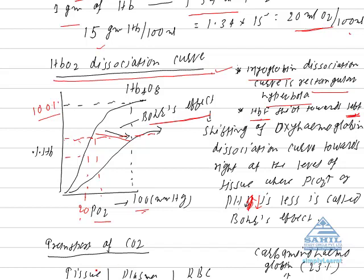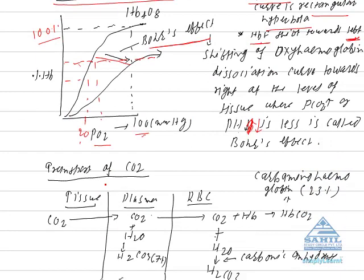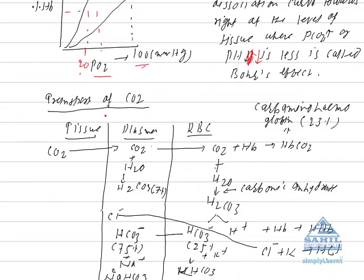Now we come to transport of carbon dioxide. Carbon dioxide is transported in three different forms. 7% of CO2 is transported in the form of carbonic acid.